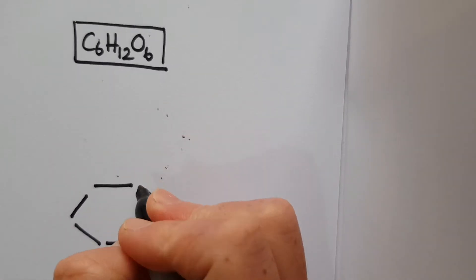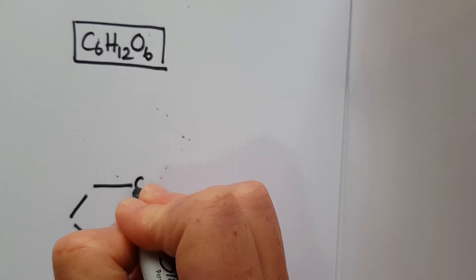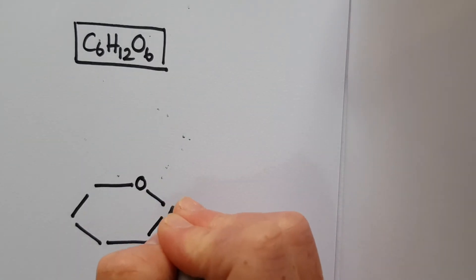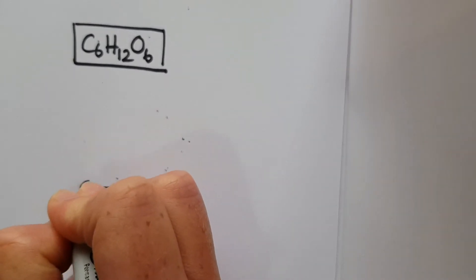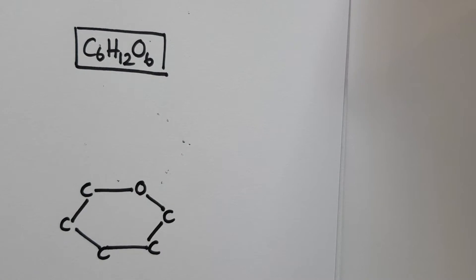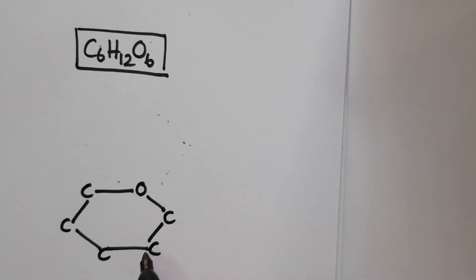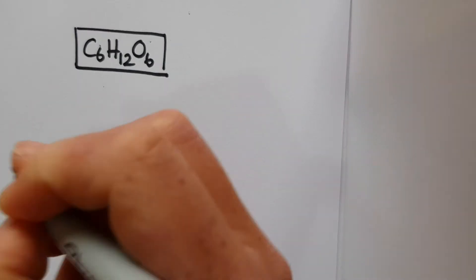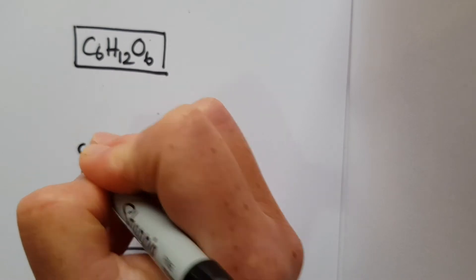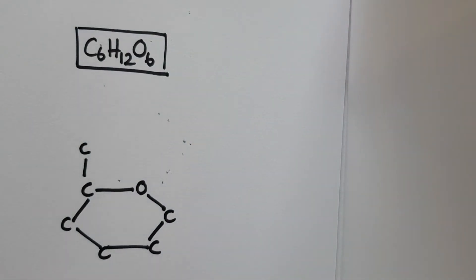So in the top right hand corner here, we're going to have oxygen. And then in each of these other spaces, we're going to have a carbon. And what you'll notice here is that there's only actually five carbons there, and we need to have our sixth carbon, which I'm going to draw off the top of this fifth carbon, as you can see here.